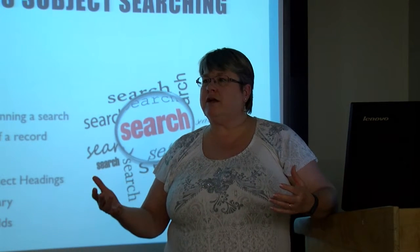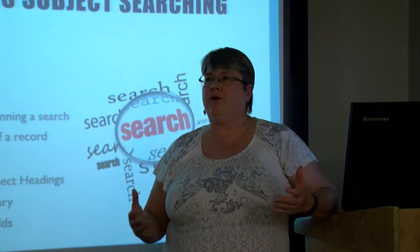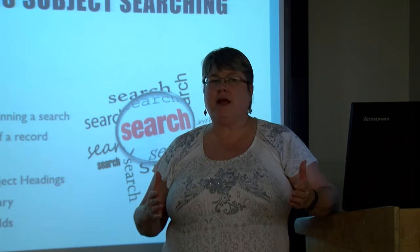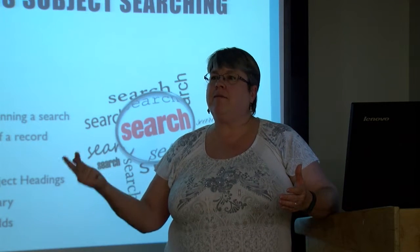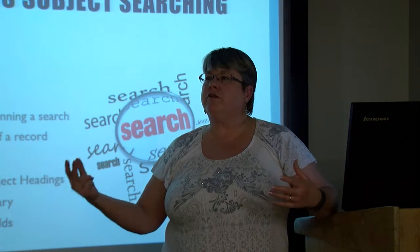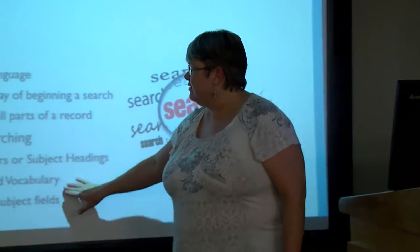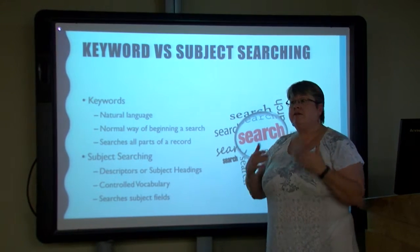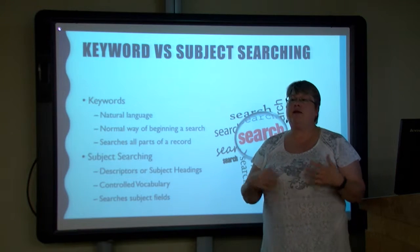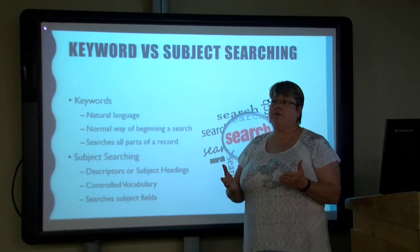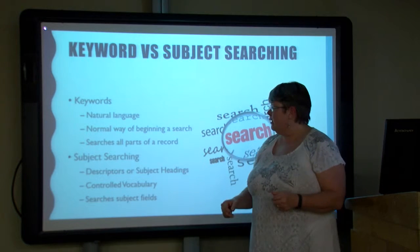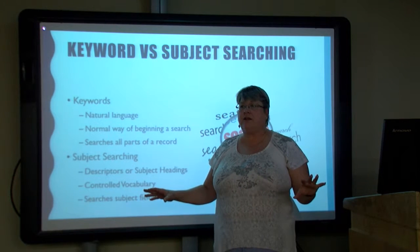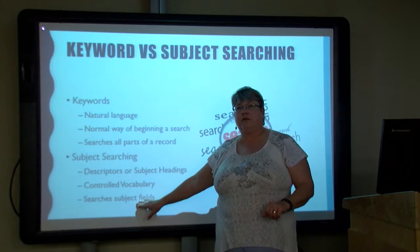For example, an article about emotional intelligence of academic librarians in Pakistan would have subject headings of Pakistan, emotional intelligence, and maybe academic libraries or university libraries. This controlled vocabulary means somebody out there has specific terms they're using. It can be helpful to narrow or focus a search and come up with other words you might not normally think of. This type of searching only searches the subject fields, unlike keywords that search the entire database record.